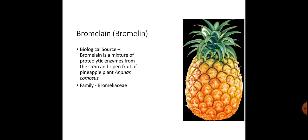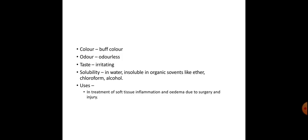Bromelain: biological source — bromelain is a mixture of proteolytic enzymes from the stem and ripe fruit of the pineapple plant Ananas comosus, belonging to family Bromeliaceae. Color: buff; odor: odorless; taste: irritating; solubility: soluble in water, insoluble in organic solvents like ether, chloroform, and alcohol. Uses: treatment of soft tissue inflammation and edema due to surgery and injury.